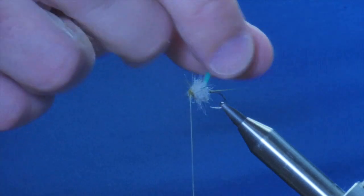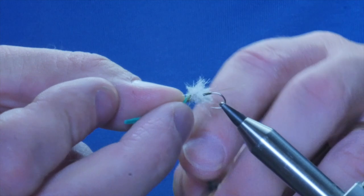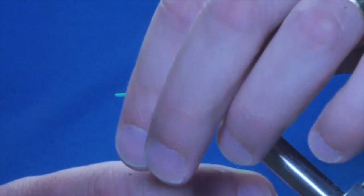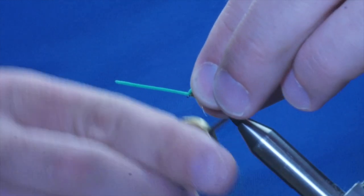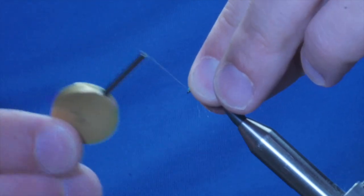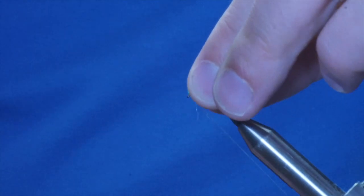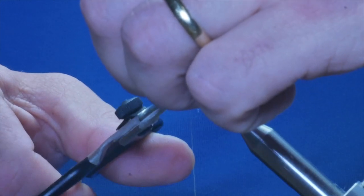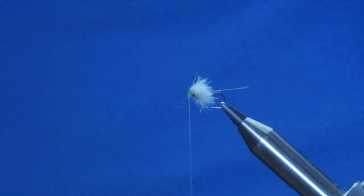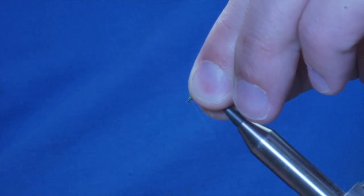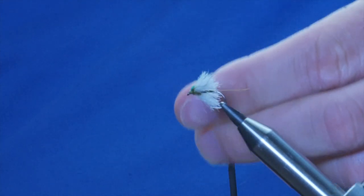So, next, I've just got to bring my thorax cover over the top. And catch it in with one turn. Bring everything back out the way while you build your head. Get your thread in front of the waist.